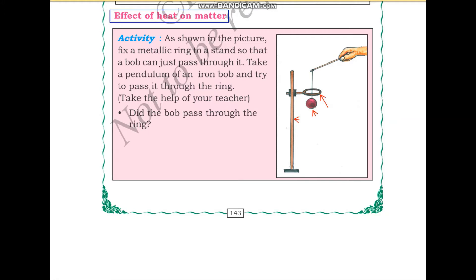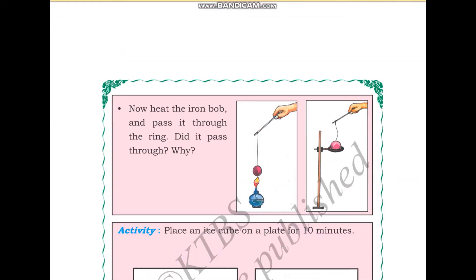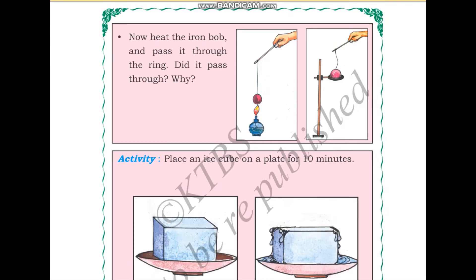Take a pendulum of an iron bob and try to pass it through the ring. First, you are passing the bob through the ring. Did the bob pass through the ring? Yes. We can see here that the bob is passing through the ring.